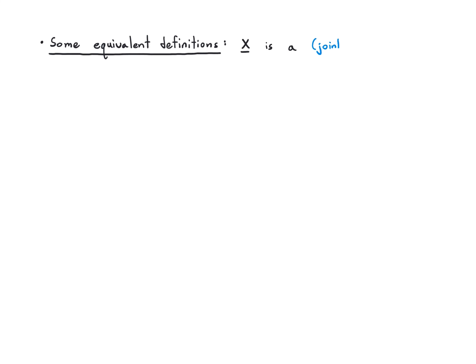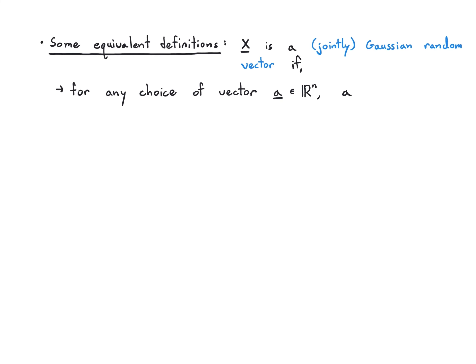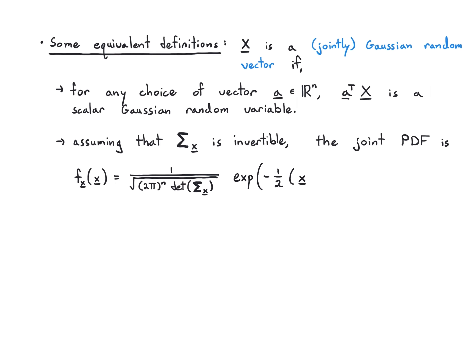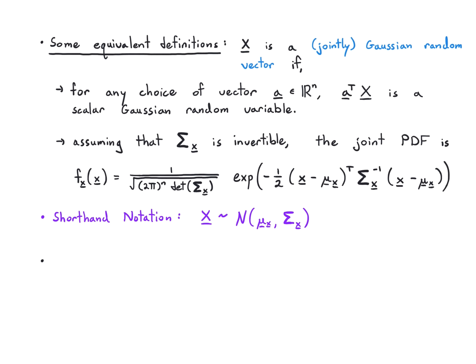Some equivalent definitions you might encounter: x is a Gaussian random vector if for any choice of vector a, the scalar a-transpose x is a scalar Gaussian random variable. You can also assume the covariance matrix is invertible, in which case the Gaussian random vector has a joint PDF equal to 1 over (2π)^(n/2) times the square root of the determinant of the covariance matrix, times exp(−(1/2)(x−μ)^T Σ^{−1} (x−μ)). The shorthand notation is x ~ N(μ_x, Σ_x).